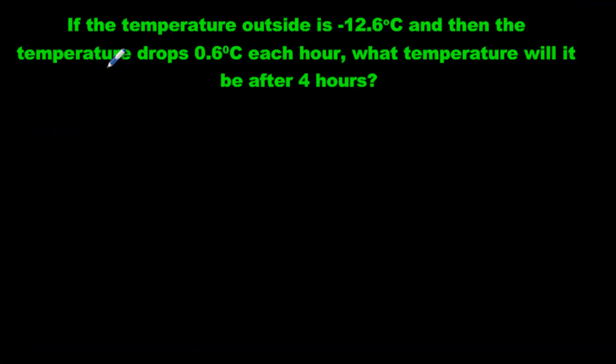Here we have temperature. Very practical. If the temperature outside is negative 12.6 degrees, and then the temperature drops 0.6 degrees each hour, what temperature will it be after four hours? A lot going on here. So we have here, we know the temperature outside is negative 12.6. Great. But then the temperature drops. What does drop mean? Of course, it means subtract. I hope nobody said add. It's subtract. So we're going to subtract 0.6? No, because it drops 0.6 every hour for four hours. So how much did it drop? Isn't that 0.6 times 4? Yeah, so let's do that.